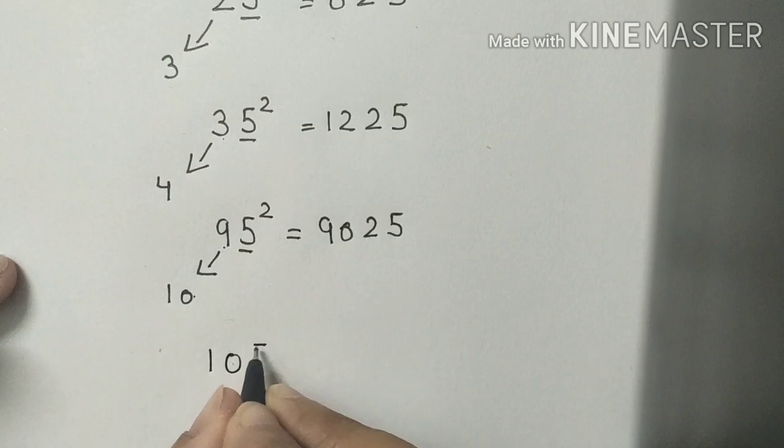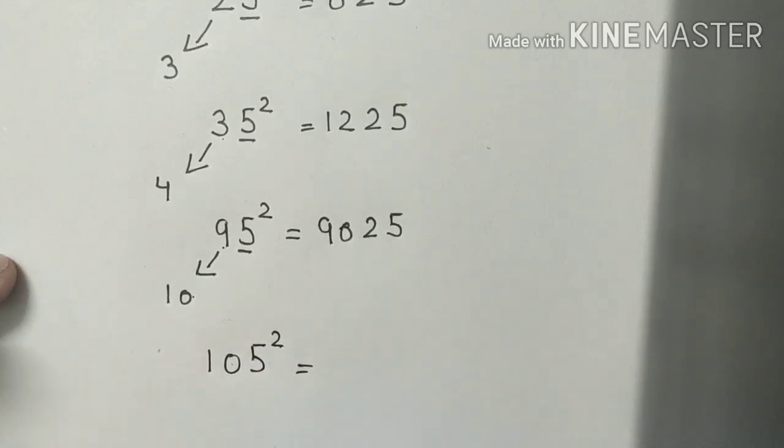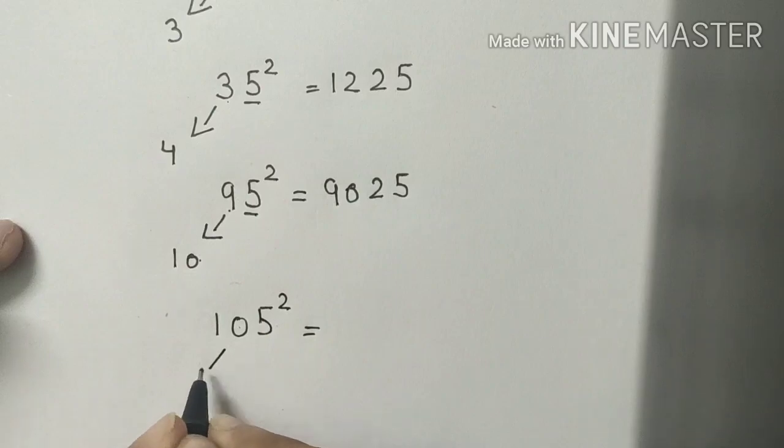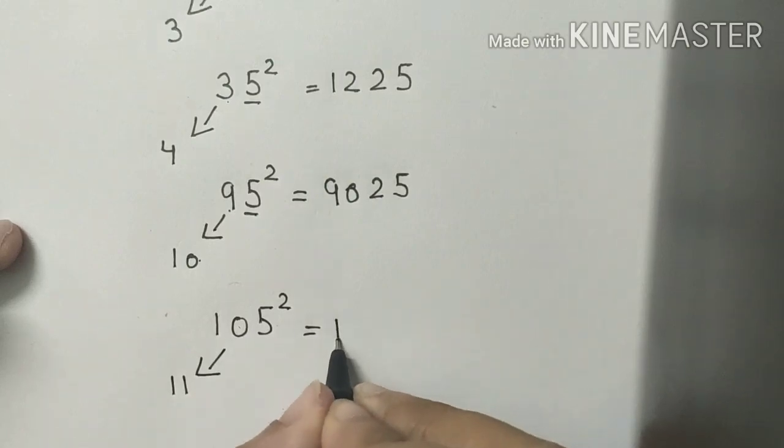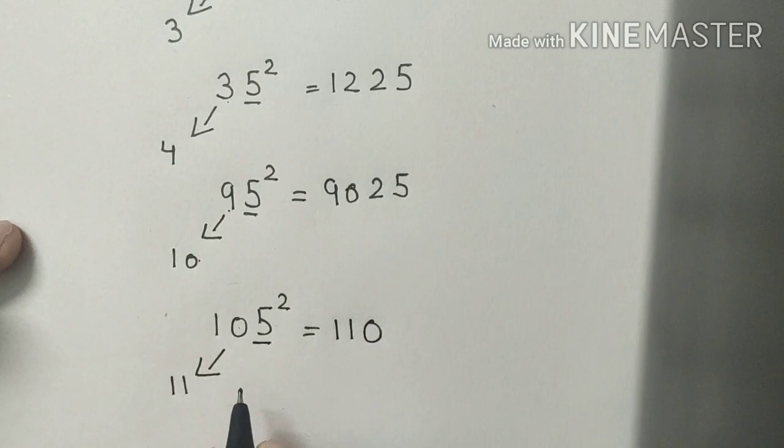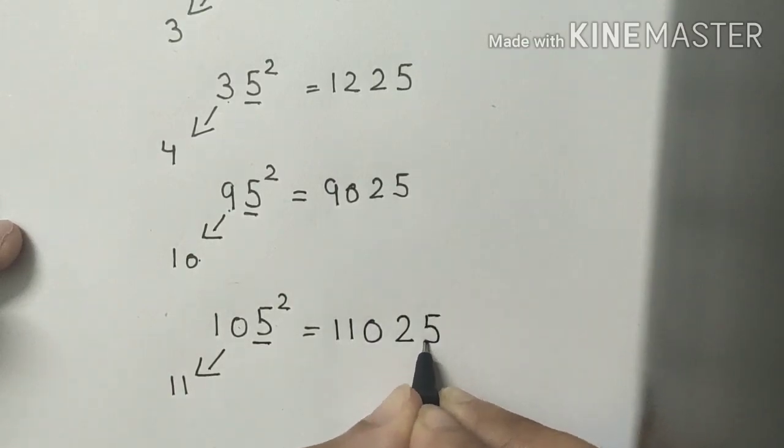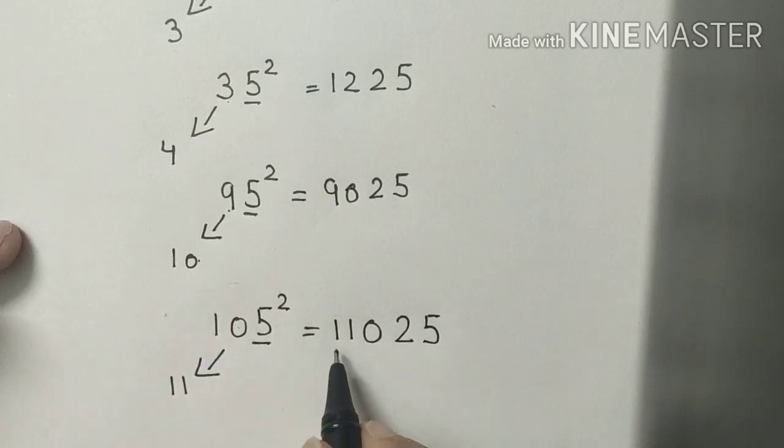Now calculate the square of 105. So what comes after 10? 11, and 11 × 10 is 110, and you know that the square of 5 is 25. So the square of 105 is 11,025.